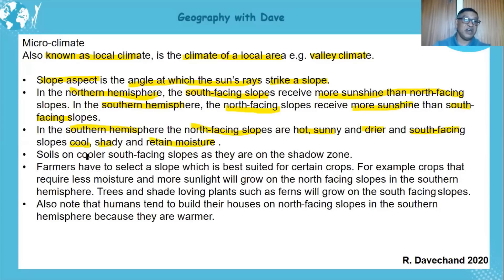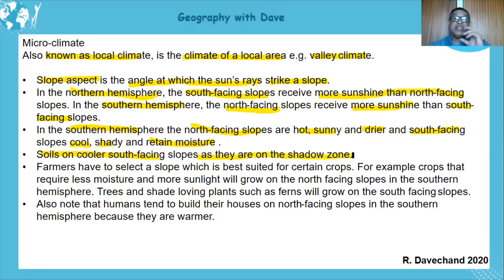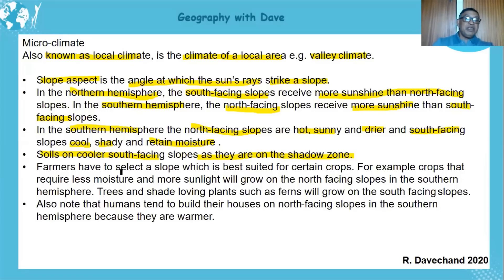Soils on the cooler south-facing slopes are cooler because they are in what is known as a shadow zone — they don't get direct sunlight. Now, farmers have to select a slope which is best suited for certain crops. That doesn't mean the south-facing slope is bad and the north-facing slope is good; there will be different crops suited to each.